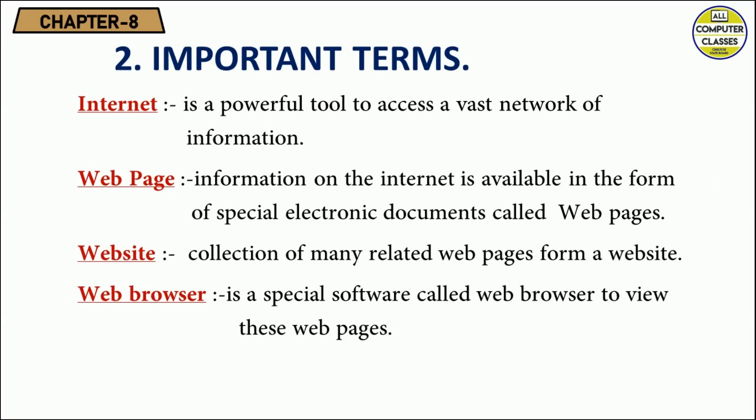The first important term is the internet. It is a powerful tool to access a vast network of information. Today every kind of information is available on the internet. Information on the internet is available in the form of special electronic documents called web pages. A collection of related web pages makes a website.